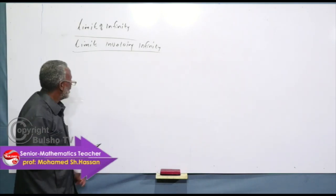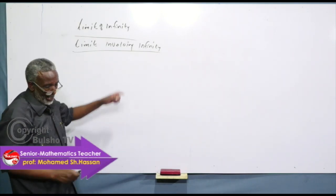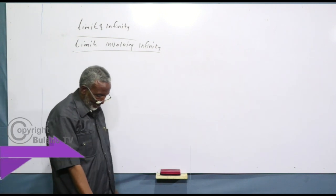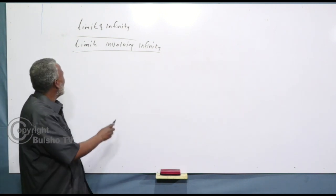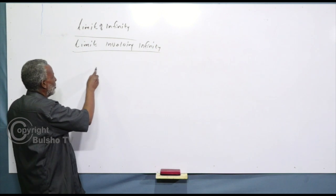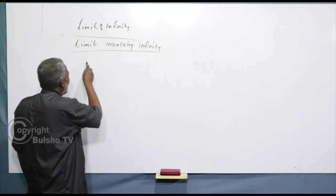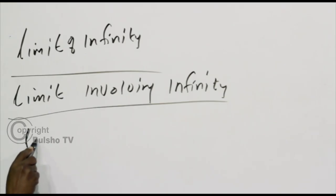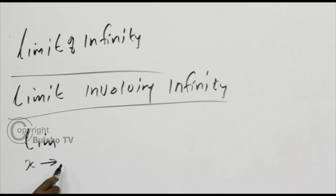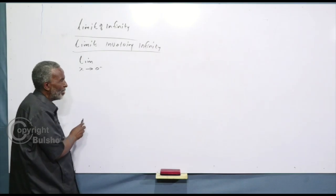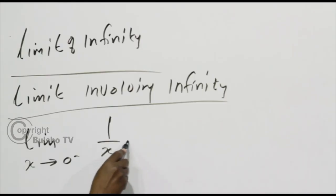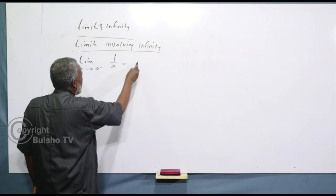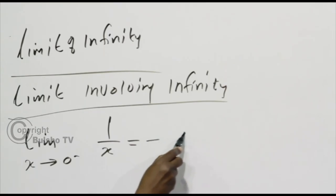We have, for example, a limit involving infinity. We have, for example, a limit of infinity. So, negative 1 divided by x — because we have minus infinity.